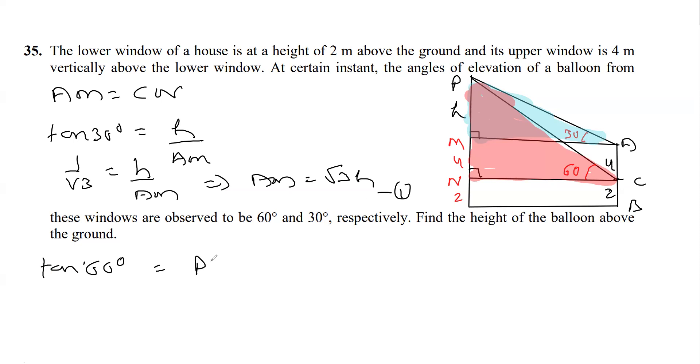In this triangle we are going to apply tan 60. Tan 60 is perpendicular over base, which is PN over CN. Now tan 60 is root 3. PN, as you can see from the figure, is H plus 4.